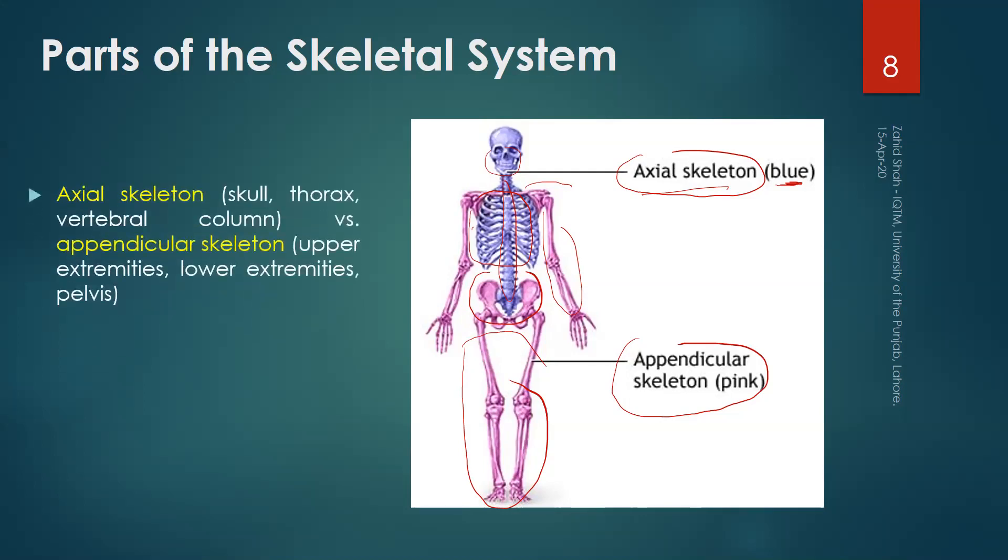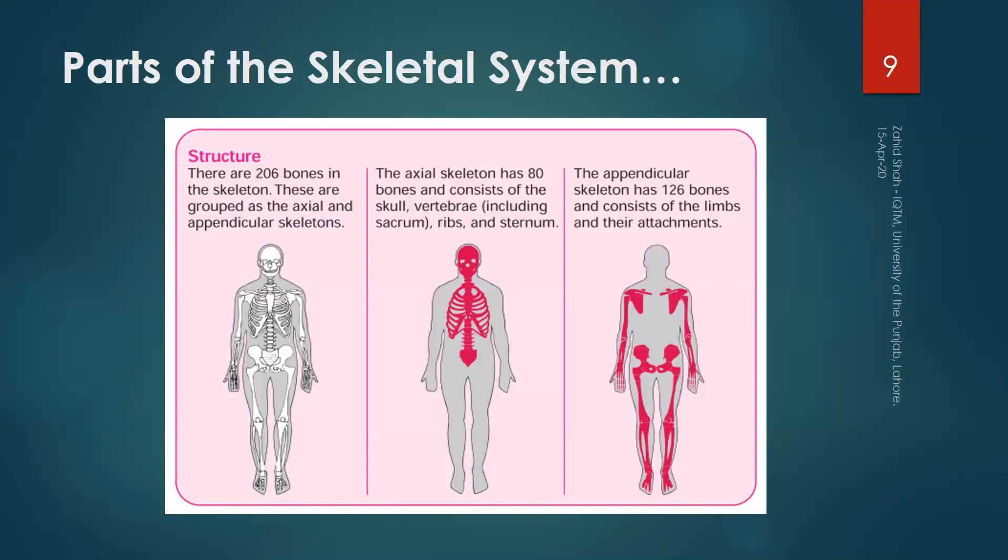Axial skeleton consists of skull, thorax, and vertebral column, whereas appendicular skeleton consists of upper extremities, lower extremities, and pelvis. In terms of structure, there are 206 bones in the human skeleton in total. These are grouped as the axial and appendicular skeleton.